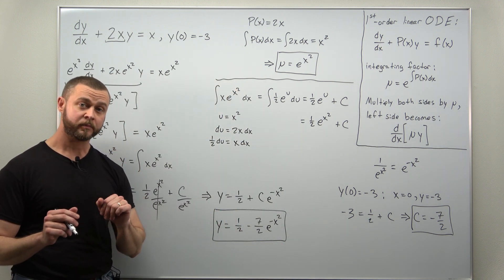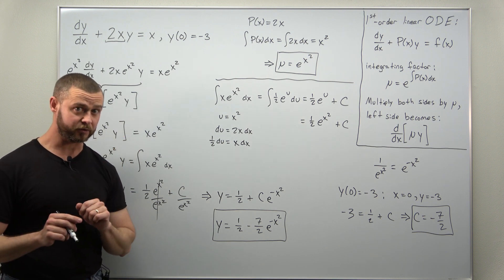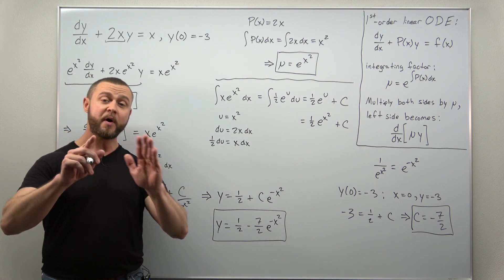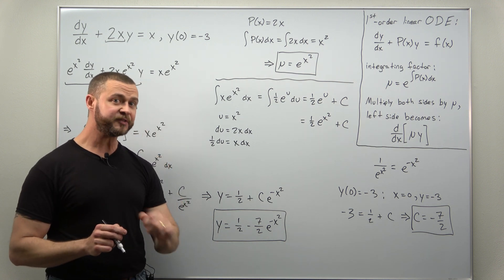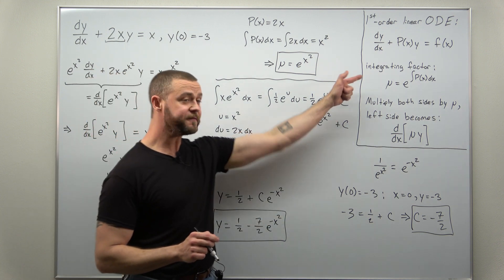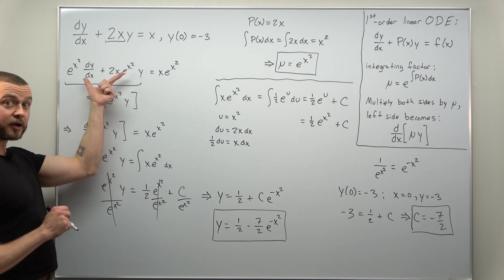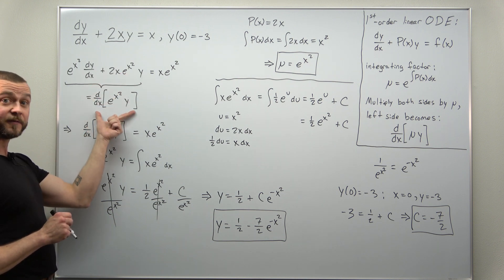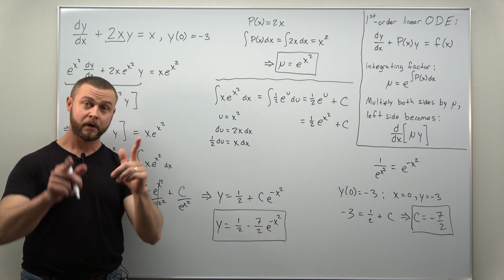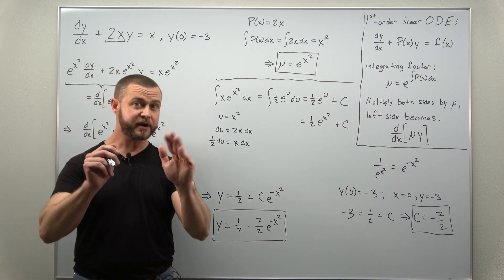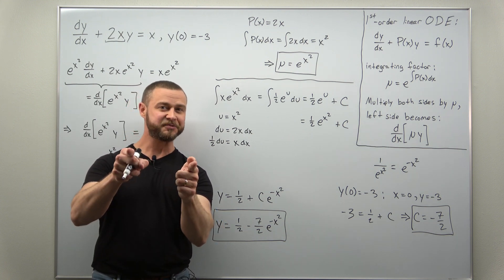And there we go. Now this is, again, a very simple first-order linear differential equation, but it contains all of the fundamental steps: how you identify p of x, how you calculate the integrating factor, how you use the integrating factor, and that was here, collapsing the left side by reversing the product rule, and then integrating both sides. Hope you enjoyed the problem. Straightforward and to the point. If you're enjoying the content, support the channel. Like and subscribe.